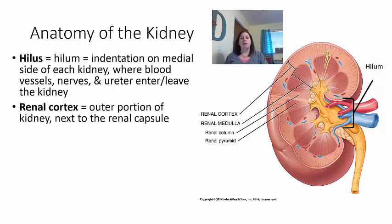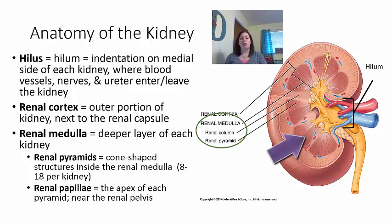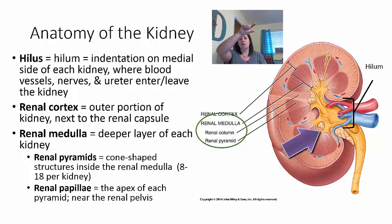The renal cortex is the outer portion of the kidney, next to the renal capsule. The renal medulla is a deeper layer and contains a number of structures. The renal pyramids are cone-shaped structures inside the renal medulla — a kidney can have from 8 to 18, which may vary based on size and genetics. The renal papilla is the apex of each pyramid, located close to the renal pelvis.